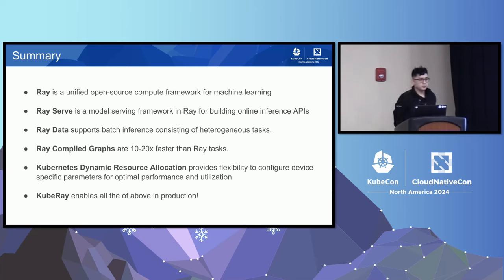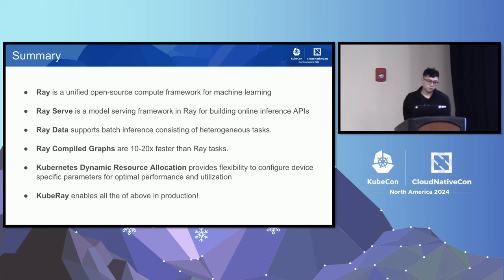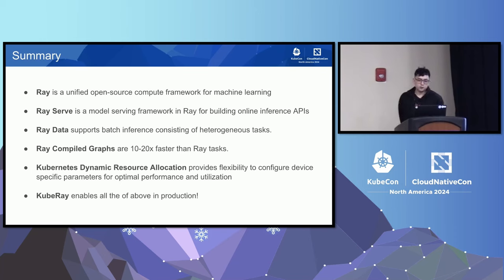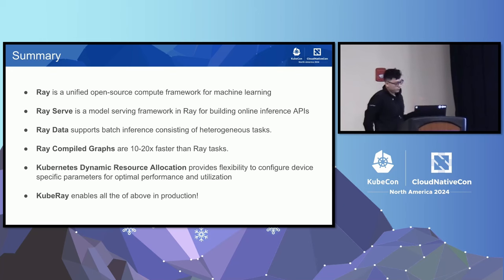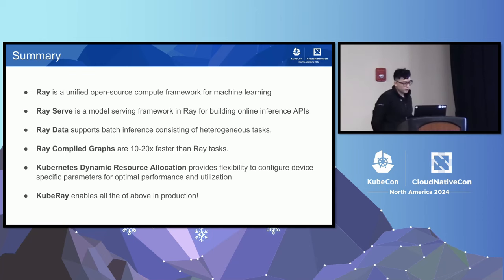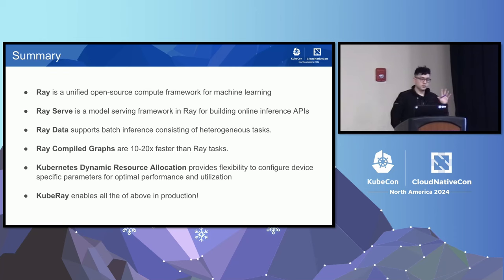To summarize the key points: we introduced Ray, a unified open-source compute framework for distributed machine learning. Ray provides RayServe for building online inference APIs, and Ray Data for offline and batch inference requiring heterogeneous compute. Ray Compile Graph enables native GPU-to-GPU communication, significantly improving tensor parallelism and pipeline parallelism performance used in inference engines like VLLM. All these techniques combined with Kubernetes DRA will unlock new ways to optimize inference performance, utilization, and cost. KubeRay is the Kubernetes operator that enables all of the above in production Kubernetes environments.